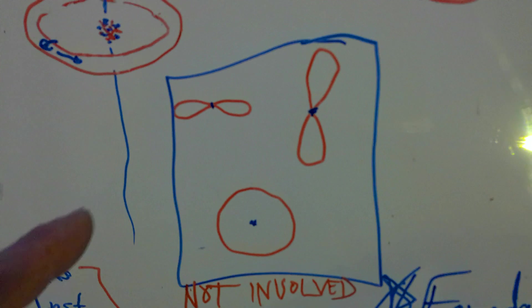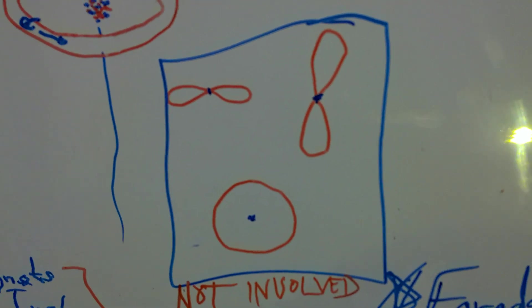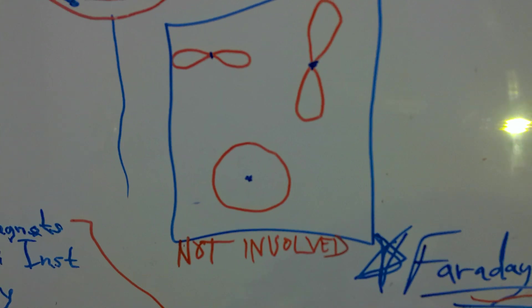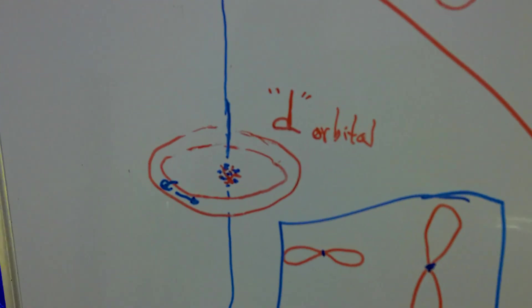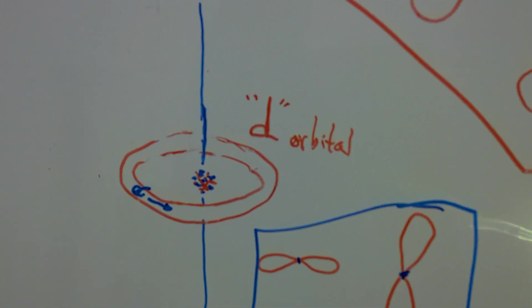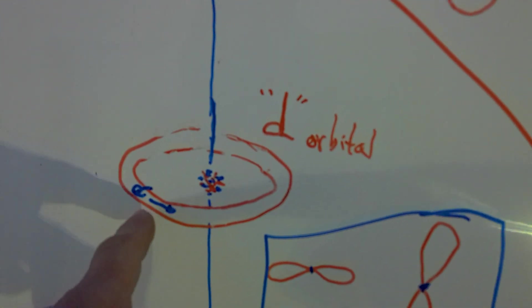But the p-orbitals, the s-orbital, are not involved with magnetism, with ferromagnetism. So that leaves my favorite one. The reason it produces magnetism is this unpaired electron.